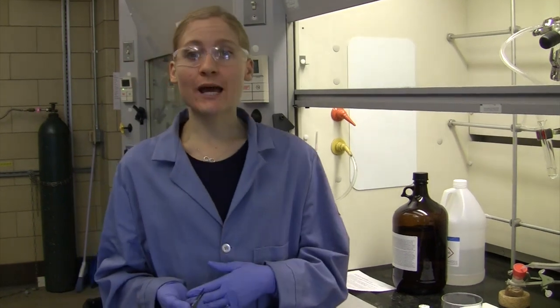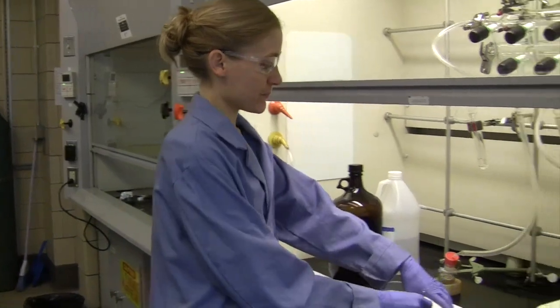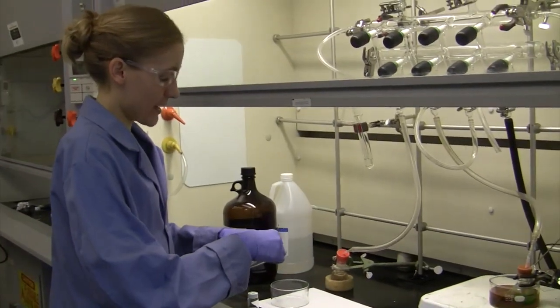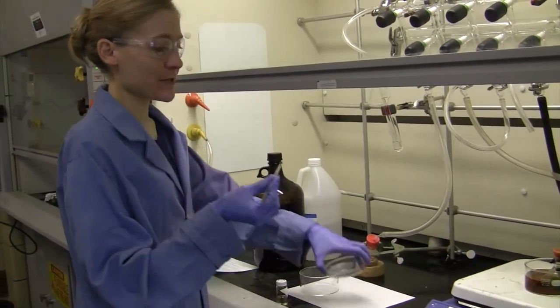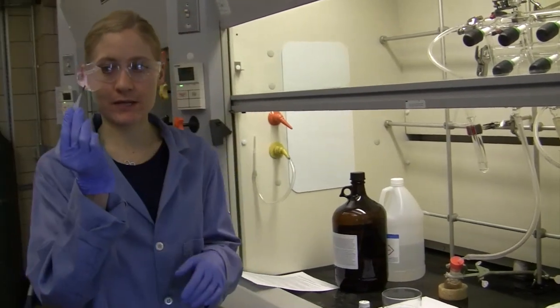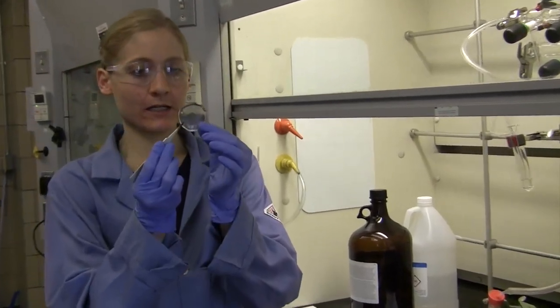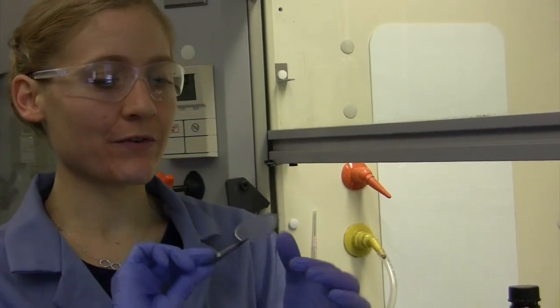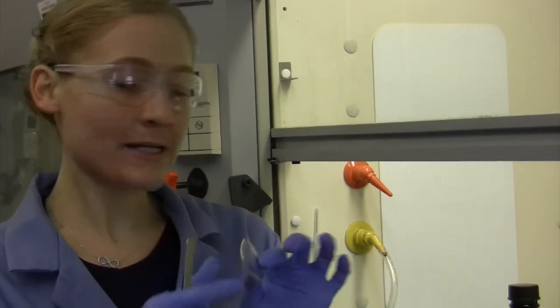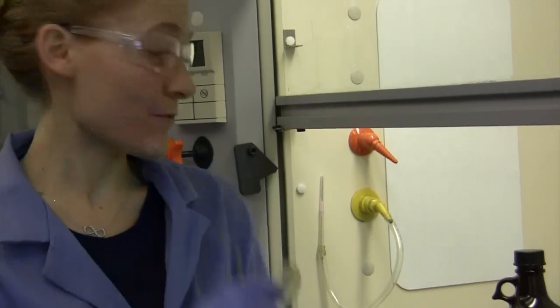So to do any sort of mechanical analysis, you need what we call a freestanding film. And we have a really nice example of a freestanding film right here. So this is PMMA, it's nice and robust. You can see, you can pick it up, move it around, give it a little bit of a bend. This is what you're going for.